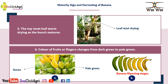Sixth sign: color of the fruit or fingers changes from dark green to pale green. You can see in this picture the dark green color gradually changes to pale green. This is the maturity indices of banana.